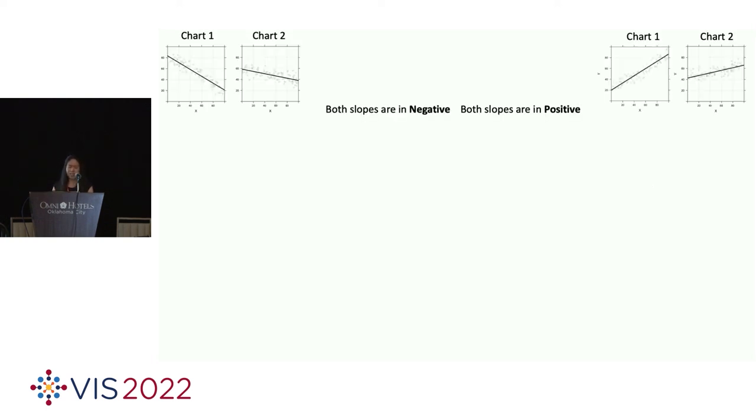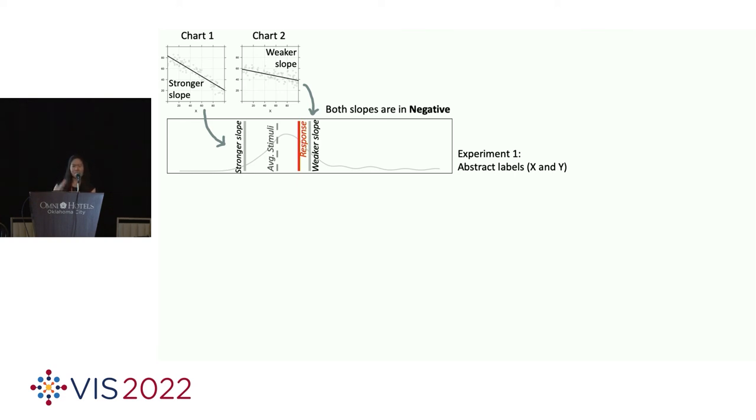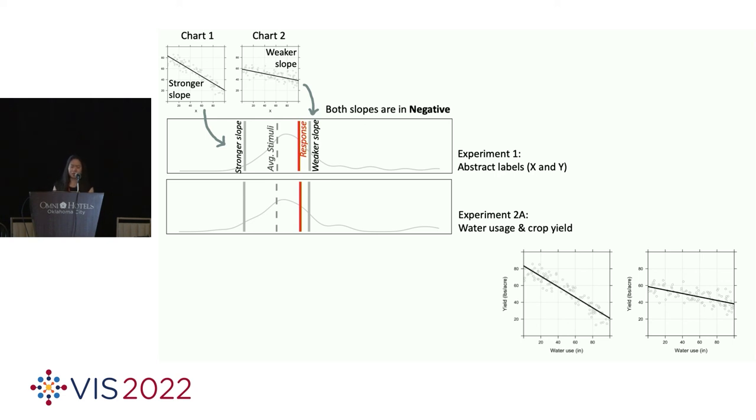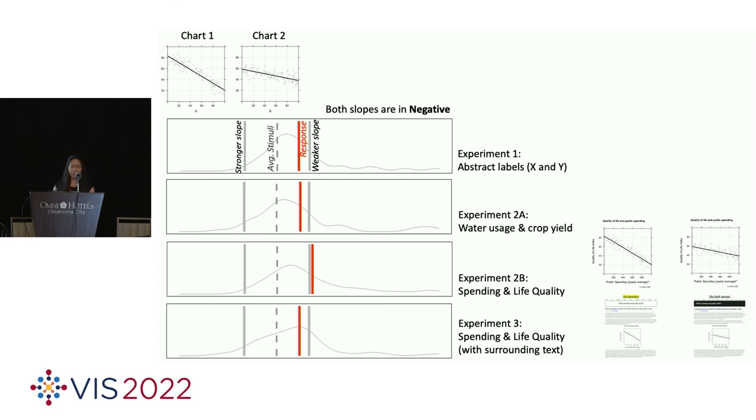And in this case, they can be both positive or both negative. And just to start off by showing some data on the both negative condition, instead of plotting the negative slope on the left and the positive slope on the right, I will plot the stronger slope on the left and the weaker slope on the right. So, the red line shows the average participant response and the gray line shows the average stimuli, which means it's the mathematical mean if you were good at this and can do math perfectly and it's not biased. So, this is the result of how participants synthesized when they saw charts labeled with X and Y. And this is the result of the charts that were labeled with water and yield. And these are the results for the spending life quality with the whole story around it. And again, you can see very consistent result, but different from what we were seeing earlier, people seem to be biased towards the weaker slope when they see two negative slopes that are more similar to each other.